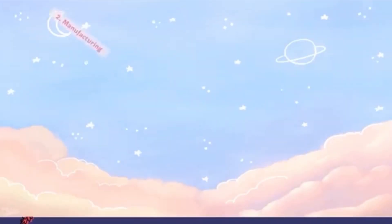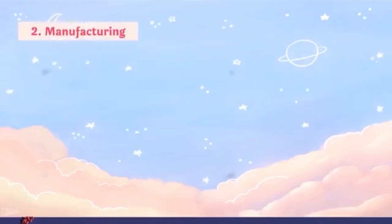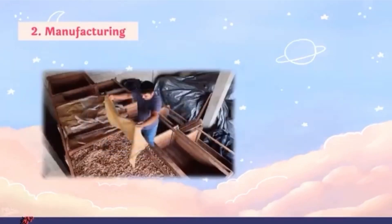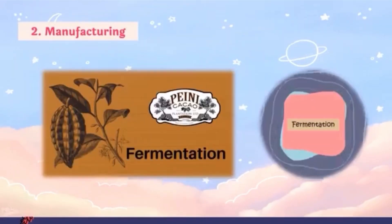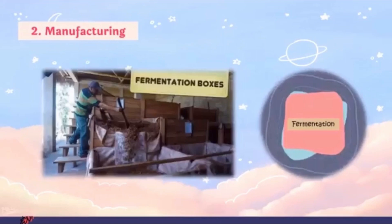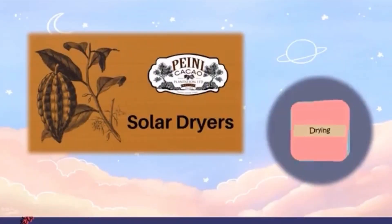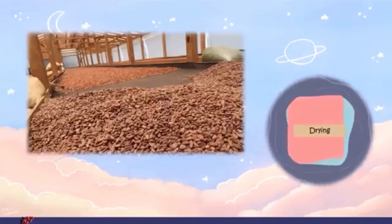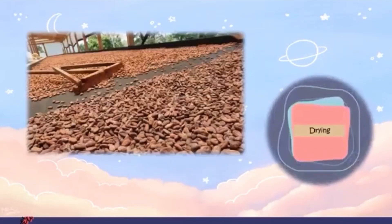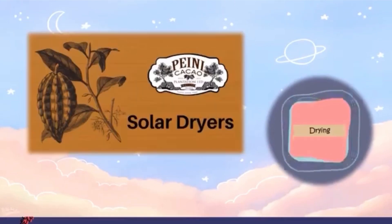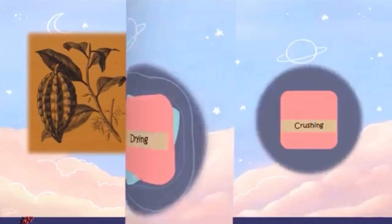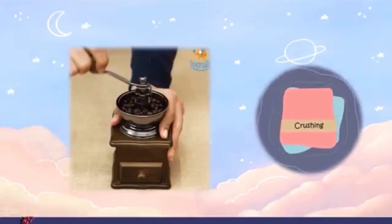Continuing with manufacturing — first is fermentation. During fermentation, the juicy sweatings of the pulp are drained away, the germ in the seed is killed by the increased heat, and flavor development begins. Second is drying the cocoa bean, for which we can use solar dryers. Third process is crushing.